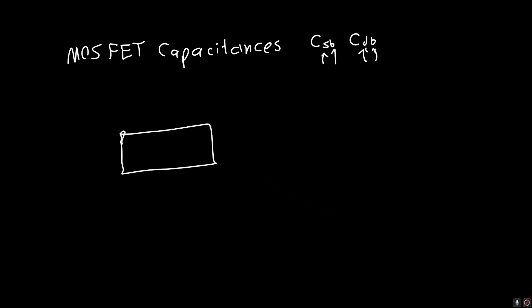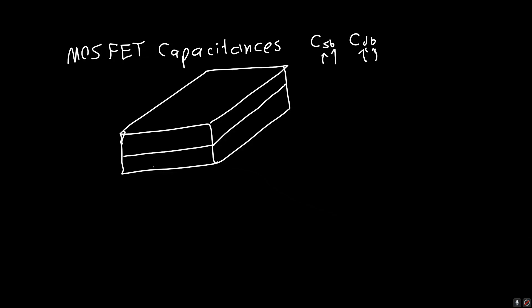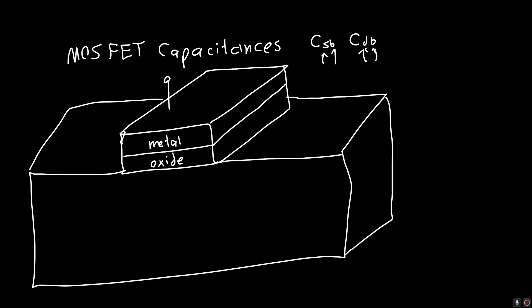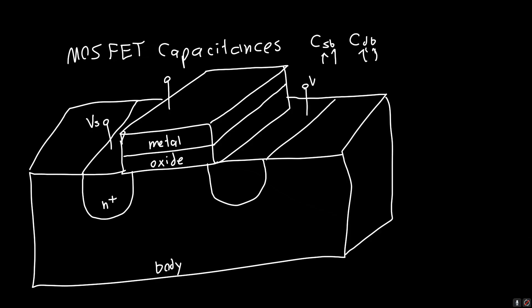If we draw out our MOSFET structure, we've got our metal, our oxide, and our body — today I'm calling it the body, as opposed to the substrate or the bulk, both of which are perfectly fine terms. We've got this N-plus region here for our source, and our drain over here, also an N-plus region. So that's our full MOSFET structure.